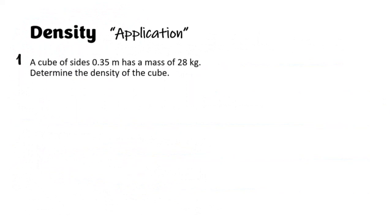So now that we've covered all of that, let's get into the application. How are we going to be using this knowledge in questions? Question one says: A cube of side 0.35 meters has a mass of 28 kg. Determine the density of the cube. First thing we do once we have questions is to record what we got. You can highlight what you got in the question and note what is required.